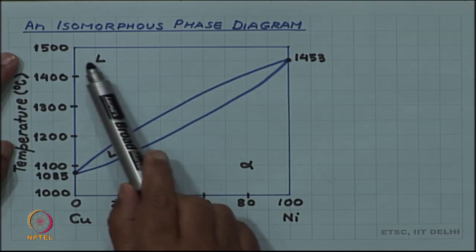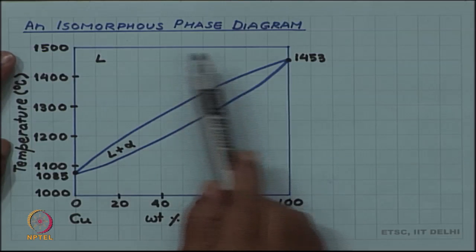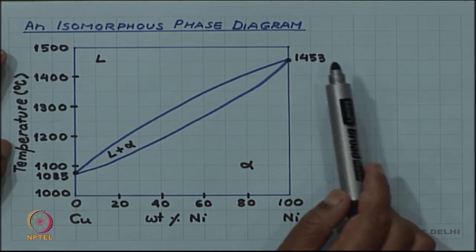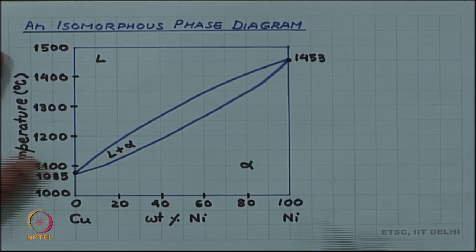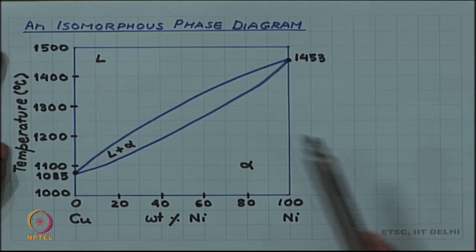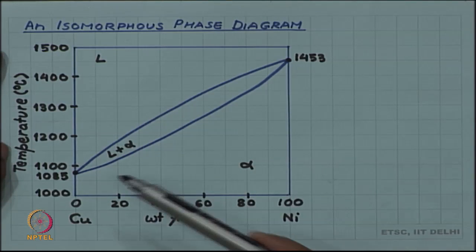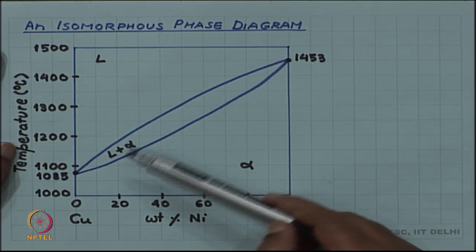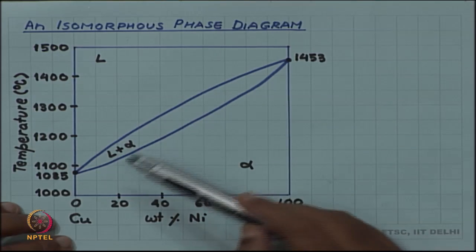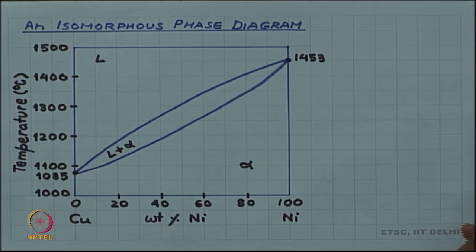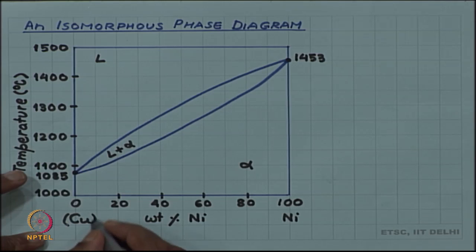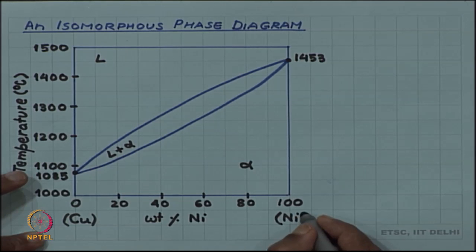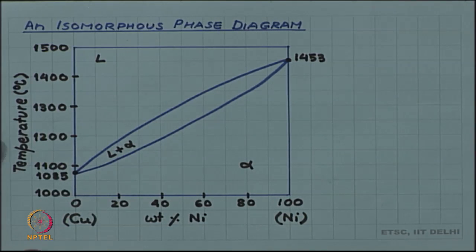Similarly, there is a single liquid phase all the way from the copper end to the nickel end at higher temperature. Such diagrams which have a single solid phase at lower temperature and a single liquid phase at higher temperature, with only two boundaries — a liquidus boundary (the upper line) and a solidus boundary (the lower line) — are called isomorphous phase diagrams. Copper and nickel is an example of an isomorphous system.